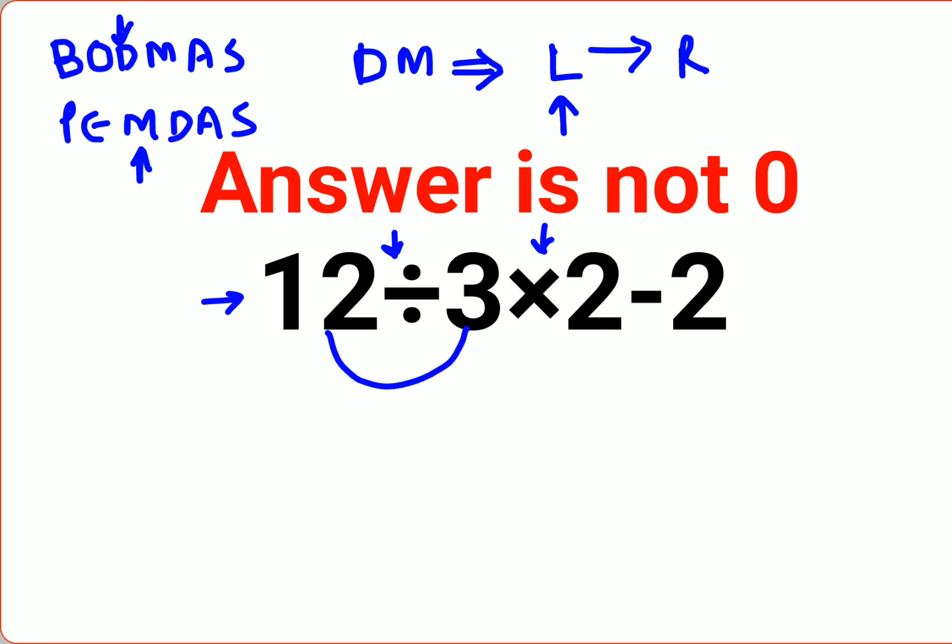So we have 12 divided by 3, that gets you 4 into 2 minus 2. So 4 into 2 gets you 8 minus 2. So the answer comes out to be 6.